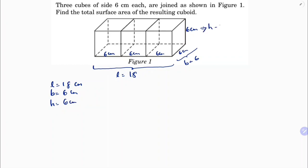Now find the total surface area of the resulting cuboid. The formula for total surface area of a cuboid is 2(LB + BH + HL). So, 2 times (18 into 6 plus